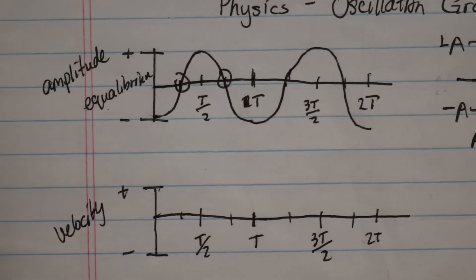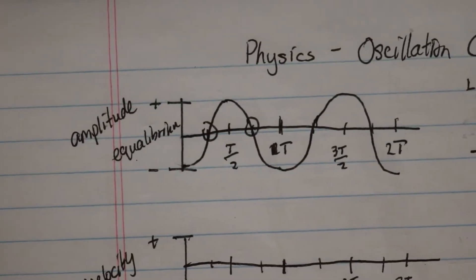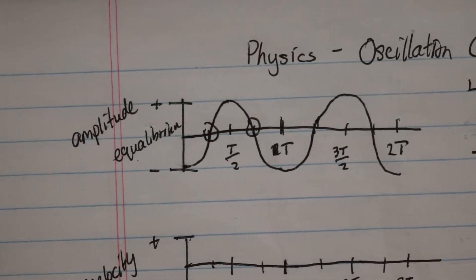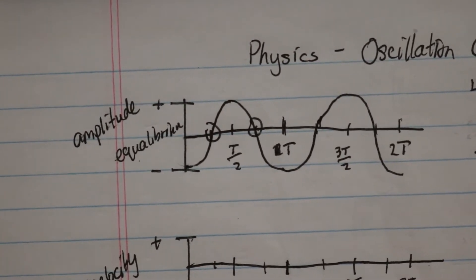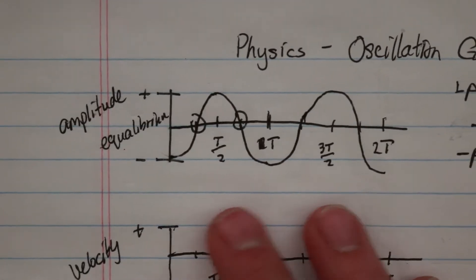So in the point of equilibrium on the spring example would be when the mass, if you let it go and it just stayed there, that would be the point of equilibrium where force gravity is equaling the force provided, the normal force provided by the spring.